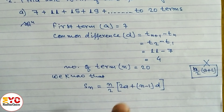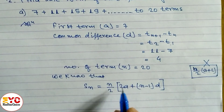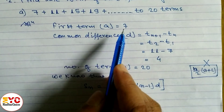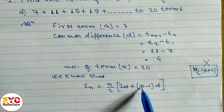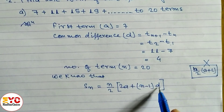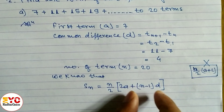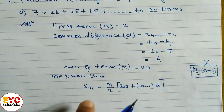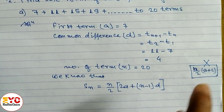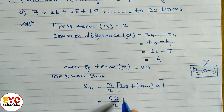Every value is available: n = 20, a = 7, d = 4. So we use the formula S_n = n/2 × (2a + (n−1)d). Substituting: 20/2 × (2×7 + (20−1)×4).